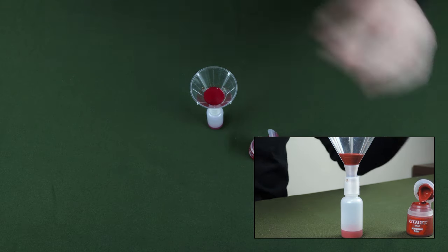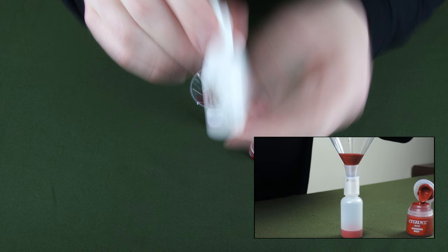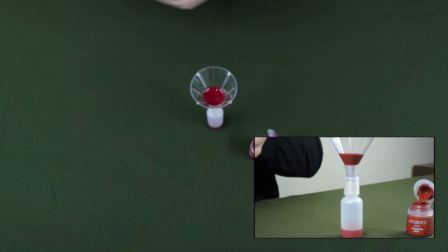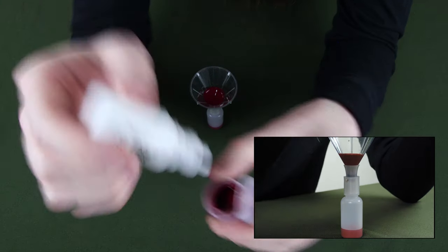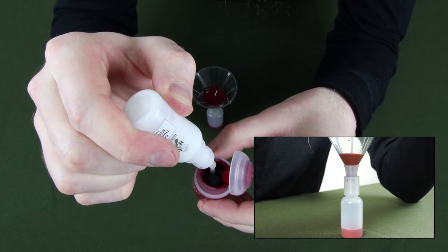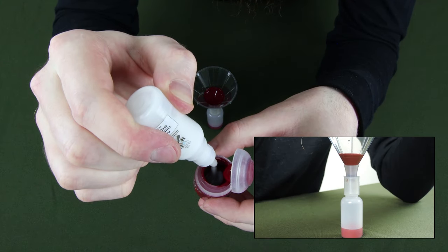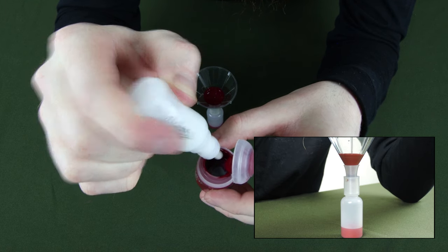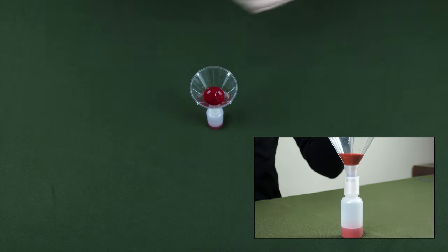If this has been sitting for a while, you're going to want to give it a good shake until you hear the agitator begin moving around, then shake it for about 10 more seconds. The amount of thinning medium that you'll need to use will be dependent on the viscosity of your paint, but somewhere around 15 drops for a full pot of paint is a good place to start.